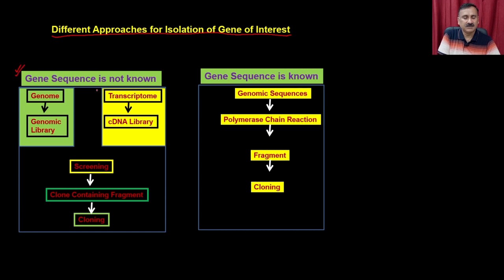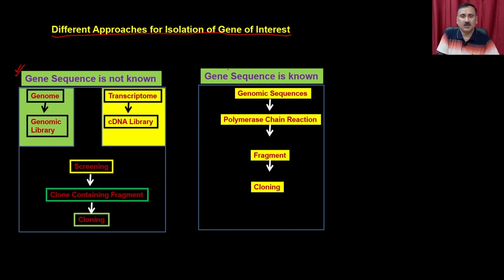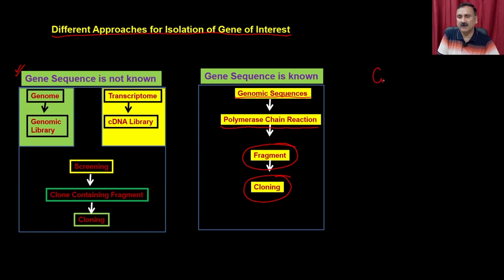We discussed the approach when the gene sequence is not known — that is the pre-genomic era. Even today, for some organisms the gene sequences are not known, so you can go for the genomic library or cDNA library approach. In the post-genomic era, we are sequencing genomes of different organisms. When the gene sequence is known, you can use genomic sequences, prepare site-specific primers, get the gene fragment, and clone it into a suitable vector.